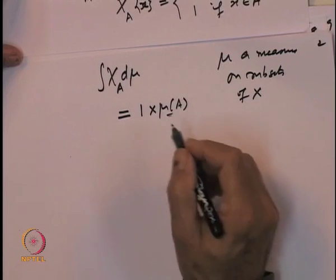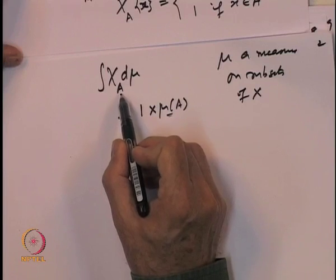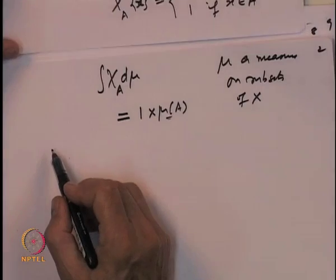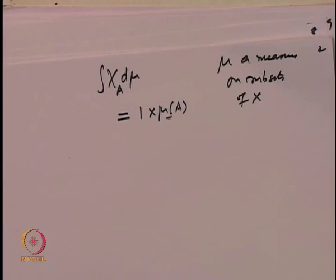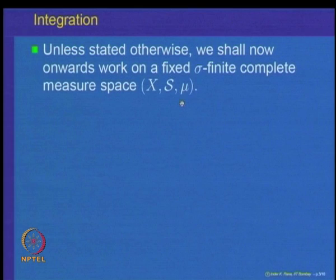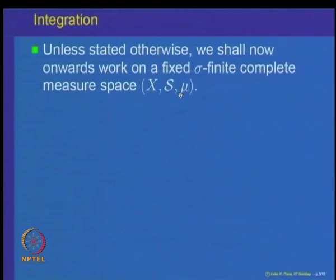So let us look at functions which are going to be linear combinations of indicator functions. We start looking at the integral of non-negative simple measurable functions. We will fix our notation that from now onwards we are going to work on a measure space (X, S, mu), where X is a set, S is a sigma algebra of subsets of X, and mu is a measure defined on S. This is a complete measure space.